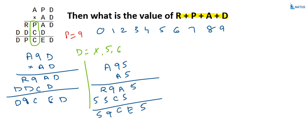Looking at 9 plus C equals C: if there is no carry, 9 plus 0 equals 9, not C. So 1 must be carried. That means 1 plus 9 plus C equals C with a carry out — so carry 1 goes forward. Also, 9 plus something other than 0 always produces a carry. So 1 plus R plus 5 equals 9, meaning R equals 9 minus 6, which is 3. So R equals 3.